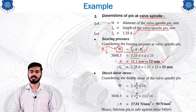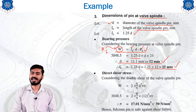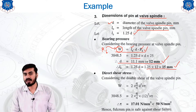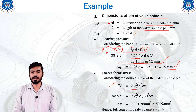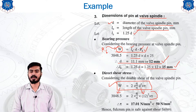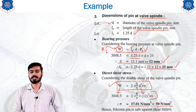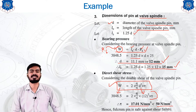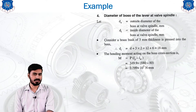With D known, LB can be calculated. Since we used an assumption, we must verify whether the design is safe under working conditions. Using the known W and calculated diameter, we compute tau = 7.01 N/mm². This is compared with the given permissible shear stress of 15 N/mm², confirming that our design is safe during working conditions.